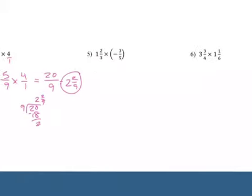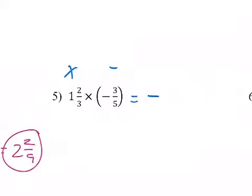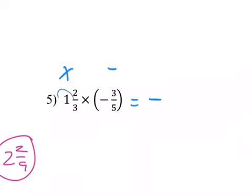I know what to do. Number 5. I've got a positive 1 and 2/3 and a negative 3/5. So is your answer going to be positive or negative? Negative. Okay. I'm going to have a negative answer. What do I need to do to 1 and 2/3 to make him match? So 3 times 1 is 3 plus 2 is 5. Perfect.